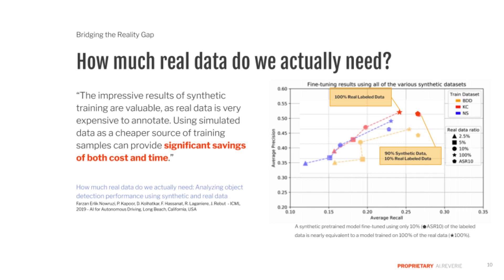As of today, synthetic data won't completely replace real data, but we're starting to get close. An independent study published at a top machine learning conference showed that by using only 10% of the real labeled data, you can get performance as good as using all of the labeled data when augmenting with synthetic data. In this chart, the red pentagon marker establishes a benchmark for a popular real-world self-driving car dataset known as cityscapes. It turns out you can actually get better recall than training just on real-world data while having nearly the same precision.